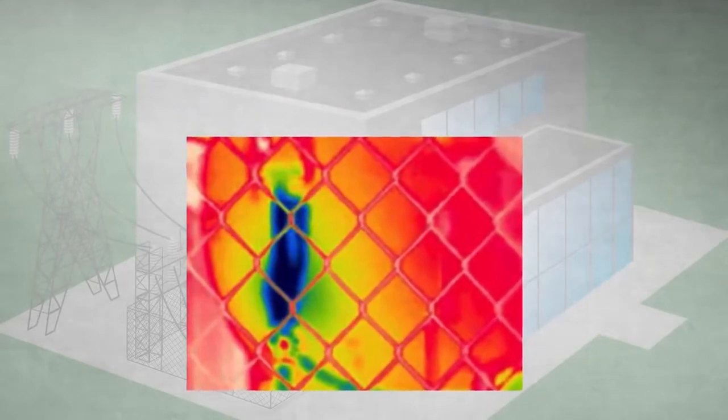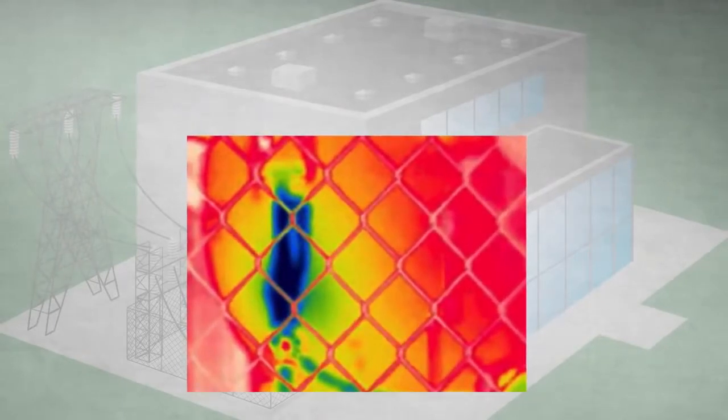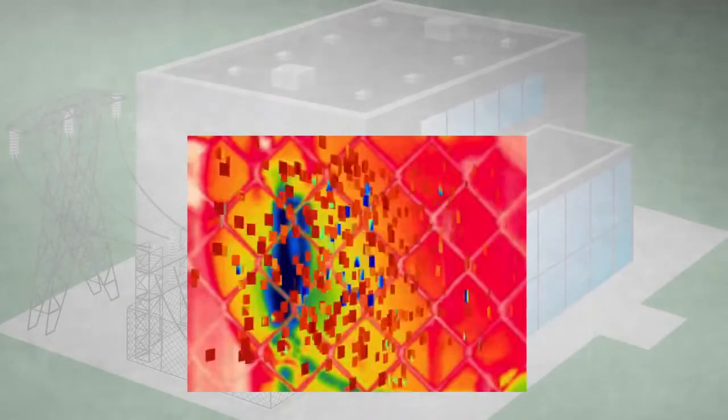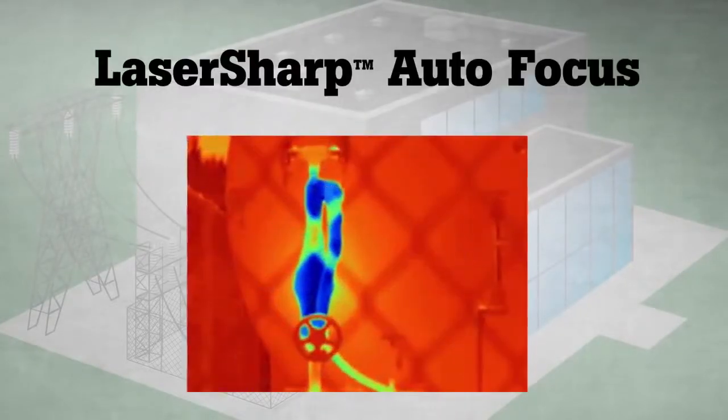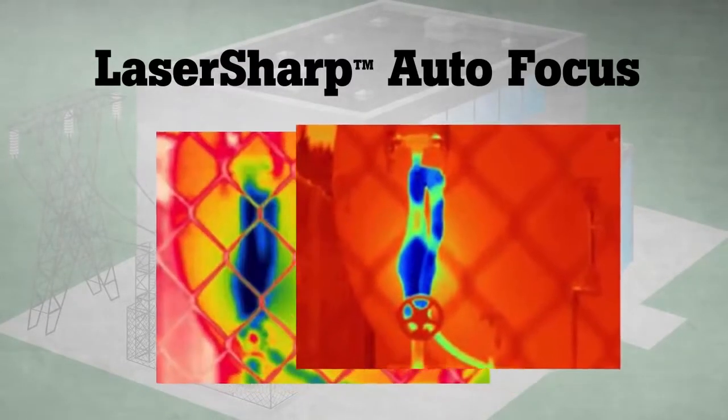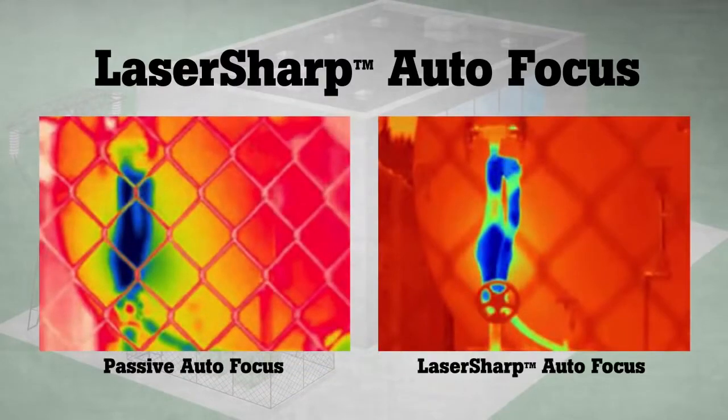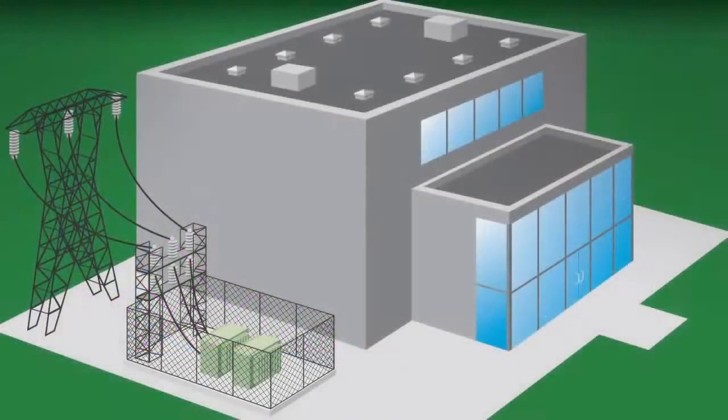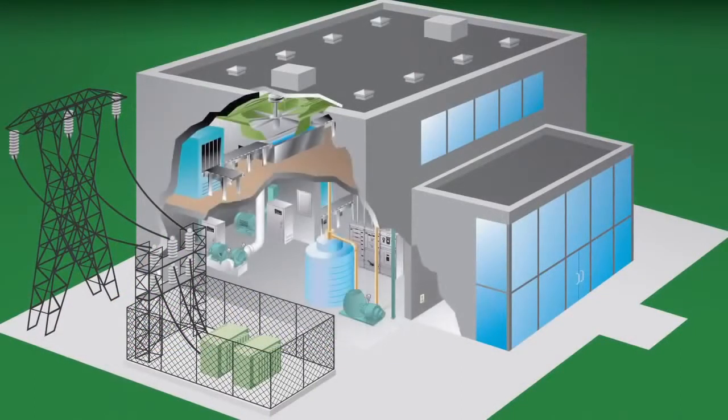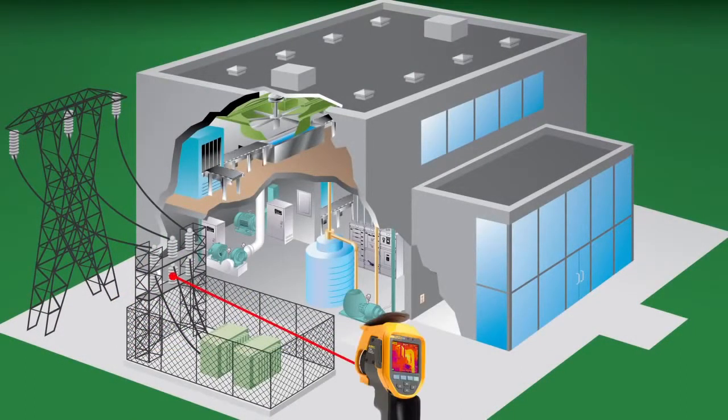Announcing a more intelligent autofocus system: Laser Sharp Autofocus, available only from Fluke. Laser Sharp Autofocus tells you exactly where you are focusing. It uses a laser to calculate the distance before it focuses.